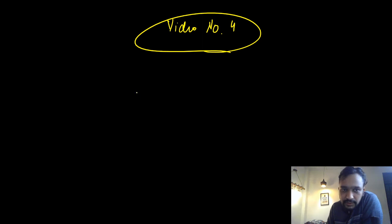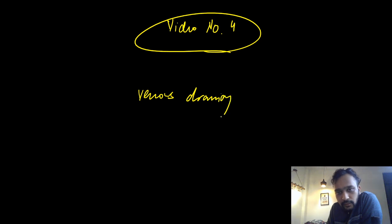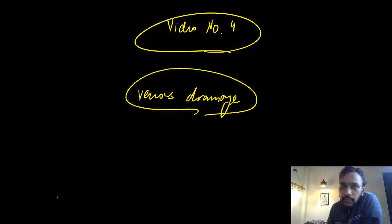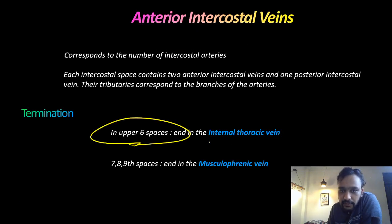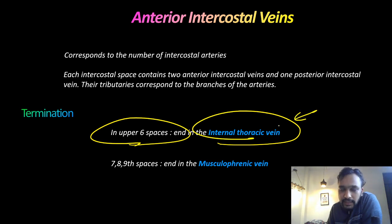Today we are going to discuss the venous drainage of the chest wall. The chest wall is drained mostly by your anterior and posterior intercostal veins. Talking about the anterior intercostal veins — in the upper 6 spaces, they are draining into the internal thoracic vein.